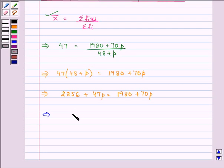We have 2256 minus 1980 equal to 70P minus 47P.